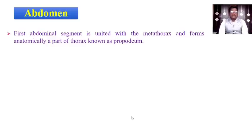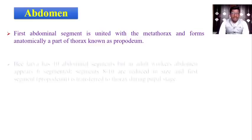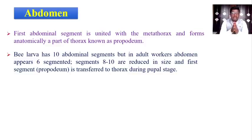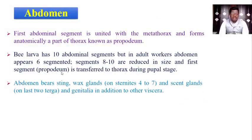Discussing the abdomen: the first abdominal segment is united with the mesothorax and forms anatomically a part of the thorax known as the propodeum. The bee larva has 10 abdominal segments, but in the adult worker, the abdomen appears six-segmented, as segments eight to ten are reduced in size and the first segment (propodeum) is transferred to the thorax during the pupal stage. The abdominal region bears the sting, wax glands, scent glands, and genitalia, in addition to other viscera.